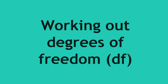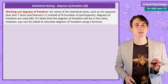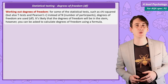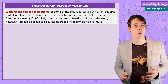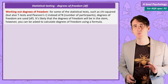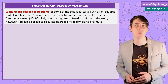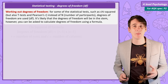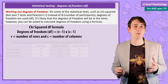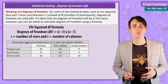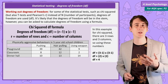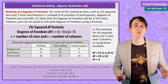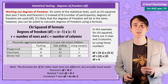Working out degrees of freedom. It is possible that if we are using a chi-squared test, AQA will ask you to work out the degrees of freedom (df) before using that to read the critical value from the table. Degrees of freedom is simply the number of rows minus one, times the number of columns minus one: df = (rows − 1) × (columns − 1). We can then use this to find our critical value and complete the question.